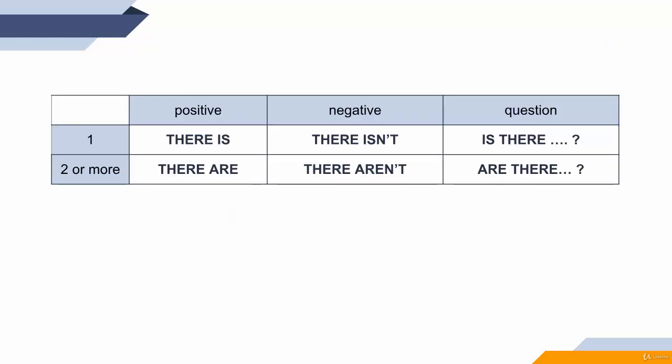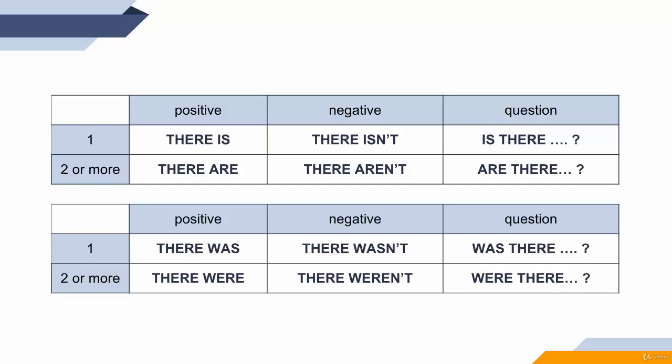The positive, negative, and question forms for the there is structure are clear. What about there was and there were? Well, they are identical. Just please be careful because a lot of people find it difficult. When they want to say something in the past, they start thinking what do I need to use? You need there was or there were, and the logic is the same. So there was, there wasn't, was there — when you speak about one thing.